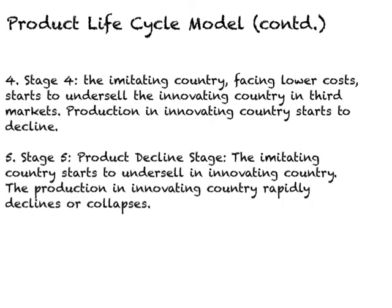In stage four, other countries which are now producing this product — the imitating countries — facing lower production costs due to cheap labor, start to undersell the innovating country in third markets. Production in the innovating country starts to decline because it can meet less and less of foreign demand. The fifth stage is called the product decline stage. At this stage, the imitating country starts to undersell the innovating country, and production in the innovating country rapidly declines or collapses.